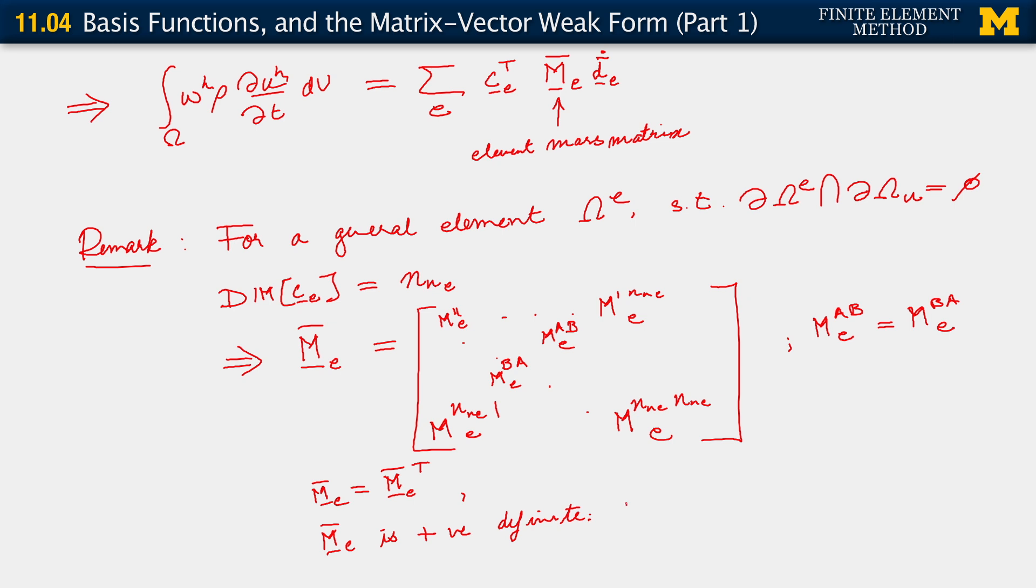So M bar e is positive definite. So what we see is that, what that means, as you would recall, is that if we took any vector c, right? And we form this product, c transpose M bar e. So if you took any c_e transpose, c_e, right?